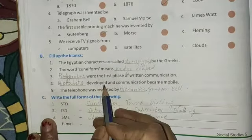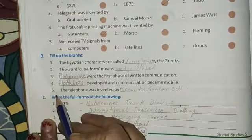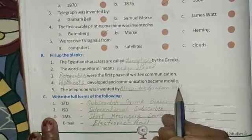Alphabets developed and communication became mobile. Number 5, the telephone was invented by Alexander Graham Bell.